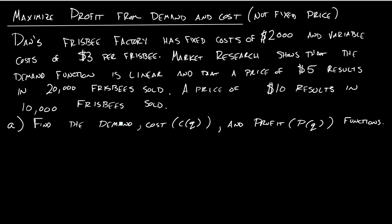And now on to maximizing what everyone really cares about, which is profit. So in this example, following my dreams, I'm running a Frisbee factory, and I have fixed costs of $2,000 and variable costs of $3 per Frisbee.